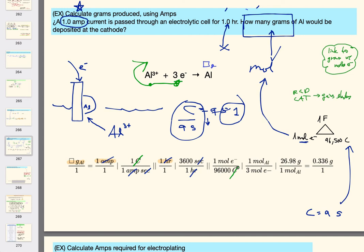Now I have moles of electrons. Since Al³⁺ takes three electrons, I know there are three moles of electrons per one mole of aluminum, and for every one mole of aluminum there are 26.98 grams. That gives me the final answer. The rest is just basic Chem 1411 stoichiometry — moles of electrons to moles of aluminum to grams of aluminum.